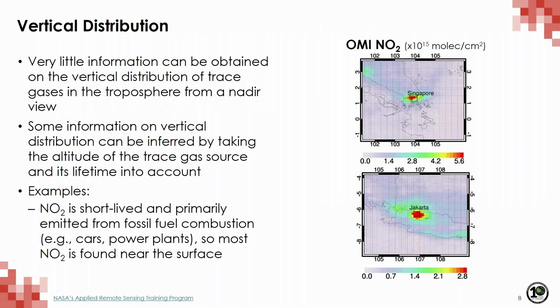Passive sensors measuring solar backscatter like OMI and TROPOMI can't readily distinguish where in the atmosphere a constituent is — they're typically measuring the entire atmospheric column, that is, the amount of a species between the surface and the top of the atmosphere. Because they're measuring this quantity, limited to no vertical information is available when viewing from a nadir-pointing instrument. However, especially for a species like NO2, some information on vertical distribution can be inferred by taking the altitude of the trace gas source and its lifetime into account.